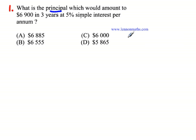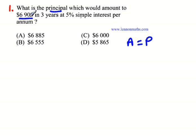So we have the amount, which we know is made up of the principle — the original amount that was borrowed or lent. The amount is given as $6,900. It's different from the principle. This amount is referring to the amount at the end of the period, so in this case it's the end of three years. The amount is made up of the principle plus the interest that was gained.